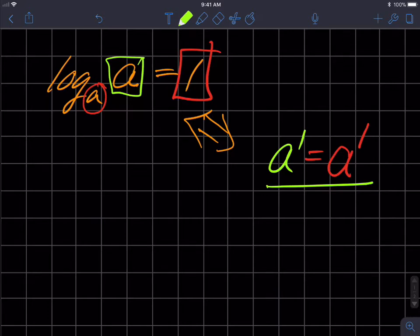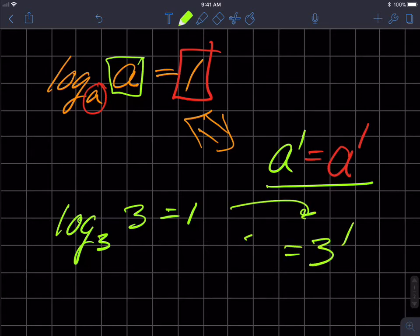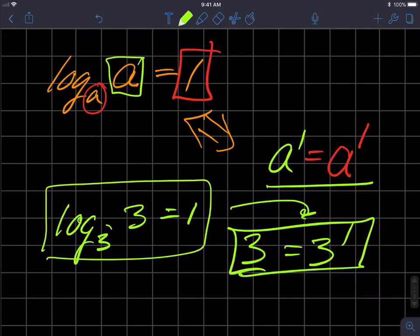So let's do a numerical example so you can see that a little bit better. If I have log base three of three is equal to one, well, if I go to exponential form, that's three to the one equals three. Is that a true statement? Yes. So this is always going to be true as long as the base and the argument are the same, it's going to equal one.